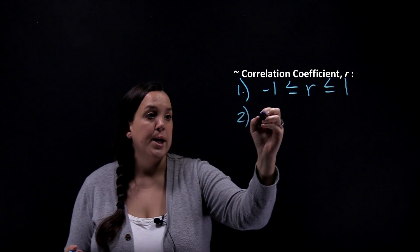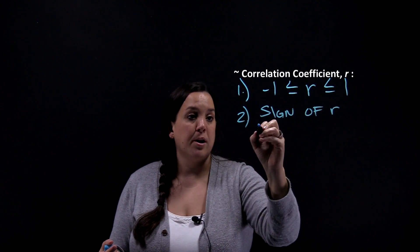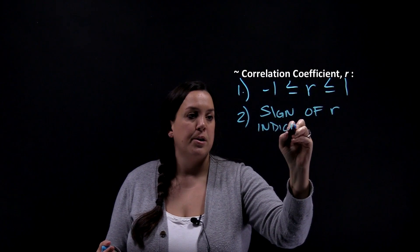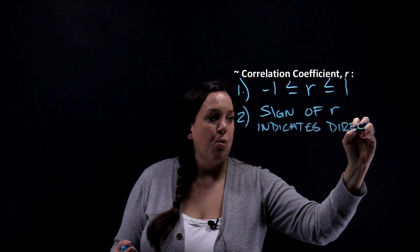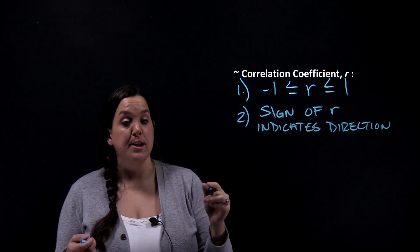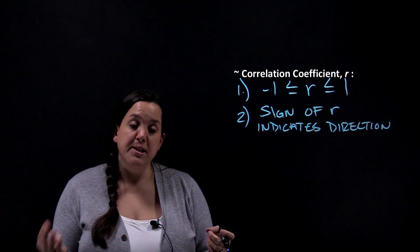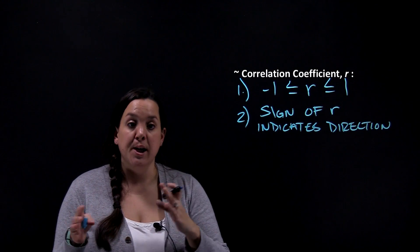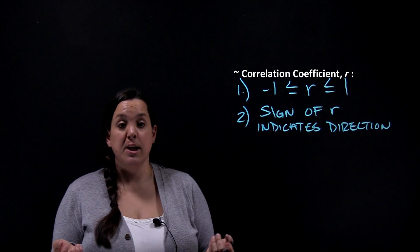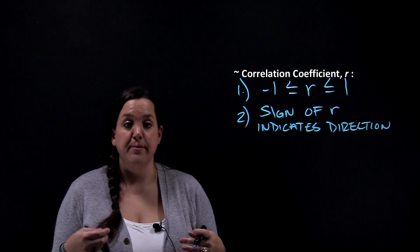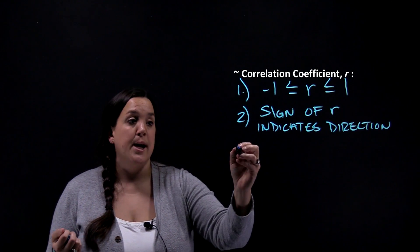The second rule is that the sign of r is going to indicate direction. We talked about scatterplots — a graphical display of two quantitative variables — and how you can have either a positive or negative association, meaning as x increases, what happens to y. The sign of r will also give you an indication of the type of association you have. If you have a negative r, you have a negative association.